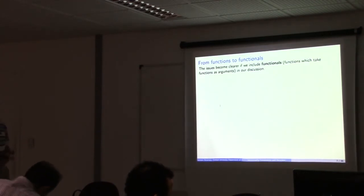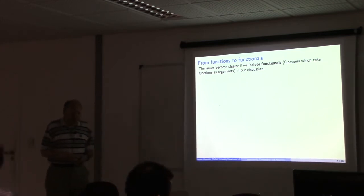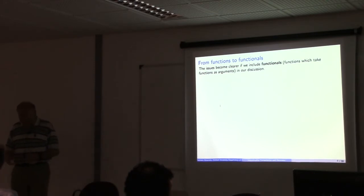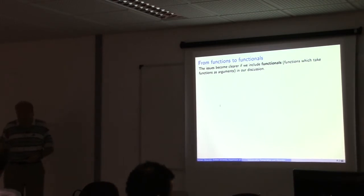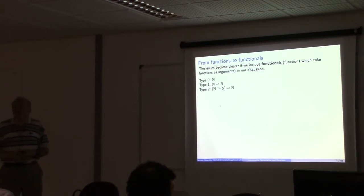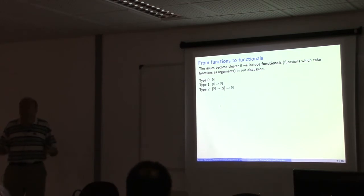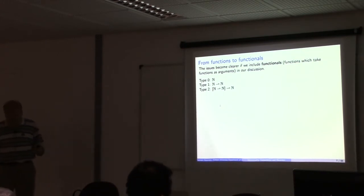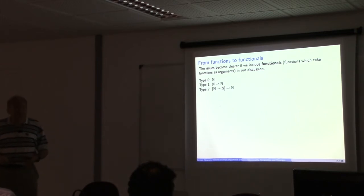Rather than trying to solve the problem for functions, I want to move to something that looks more complicated: functionals — higher-order functions. If we can't solve the problem in the simple case, why move to a more complicated one? The reason is that including functionals gives us more structure, and once we have more structure we can begin to have principles that go a long way towards pinning down what are the reasonable computable processes. This led to a beautiful development in the theory of computation, particularly associated with Dana Scott.